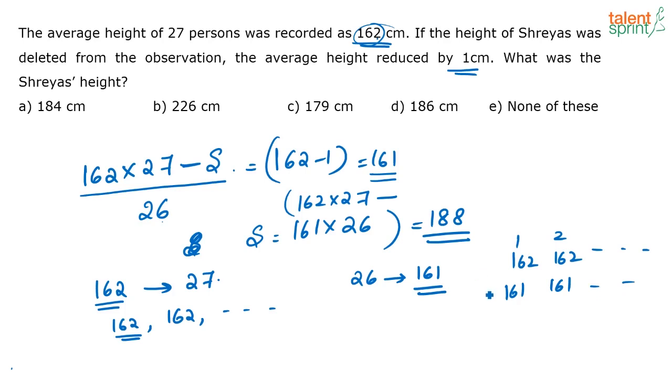Totally, the total sum of height has been reduced for each of these persons. When you add that, that is nothing but 26. The average height of Shreya was 162. So what was her actual height? That is 162 + 26 = 188.